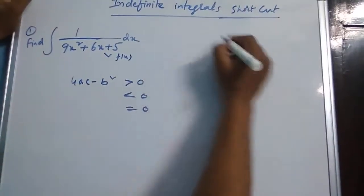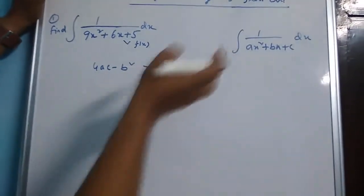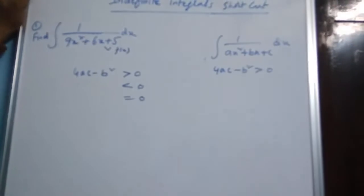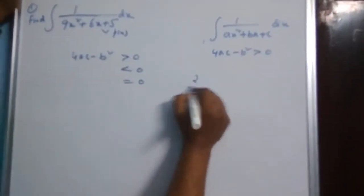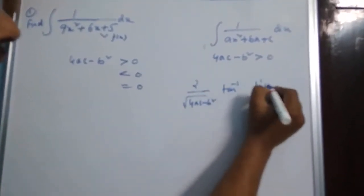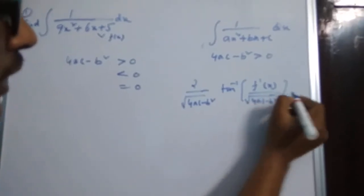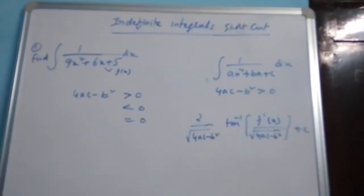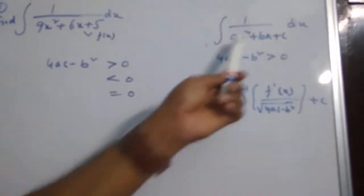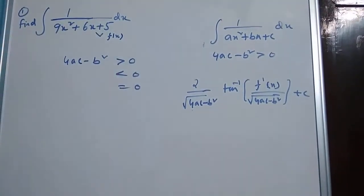If the integral is the integral of 1 by ax squared plus bx plus c dx, and if 4ac minus b squared is greater than 0, then the solution is 2 over root of (4ac minus b squared) into tan inverse of f dash of x divided by root of (4ac minus b squared), plus constant c. So if the value of 4ac minus b squared is positive, we can use this formula to evaluate the given integral.